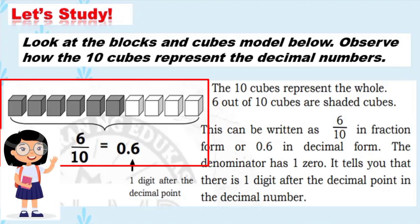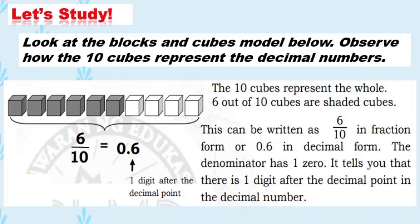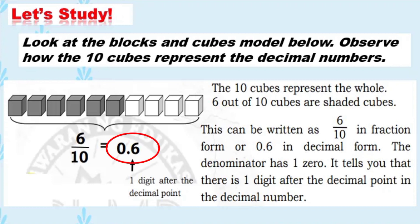The 10 cubes represent the whole. 6 out of 10 cubes are shaded. 6 out of 10 may be written as 6 over 10 in fraction form, or 0.6 in decimal form. It is also read as 6 tenths.